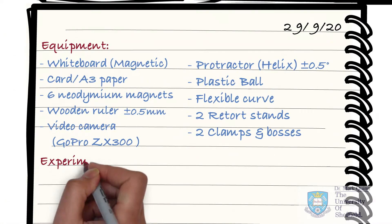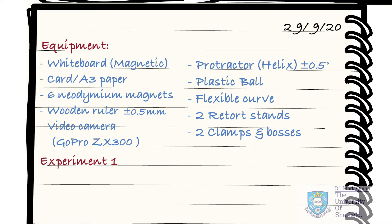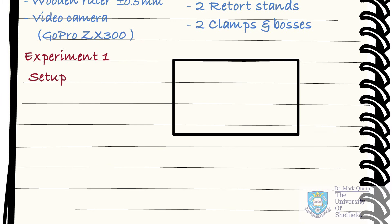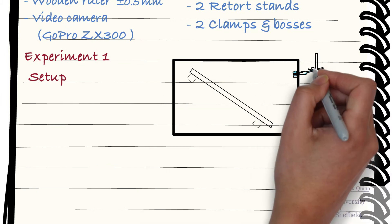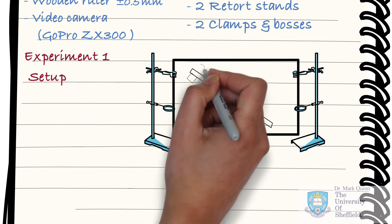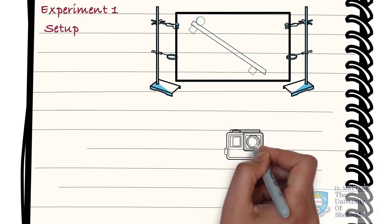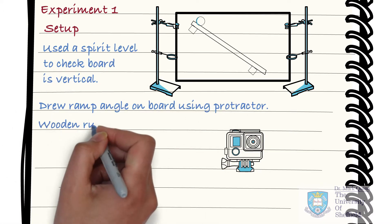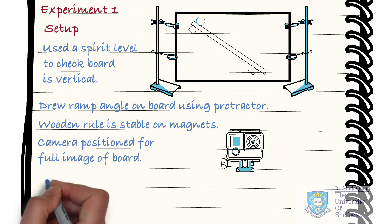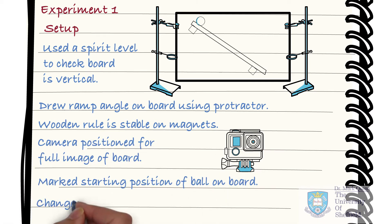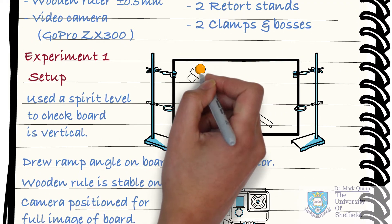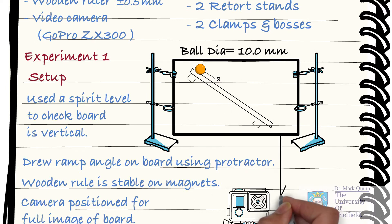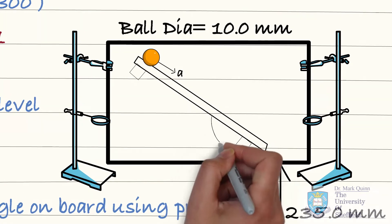Building an experiment involves trial and error until the setup is optimised. Make use of sketches to capture the details. Record the key actions taken in the setup — these details can be crucial later on for ruling out potential problems or for replicating the work. Make certain to record the key parameters such as the sizes and positions of different components, as such numbers may be needed later in the analysis.